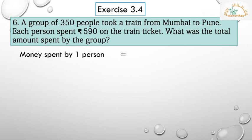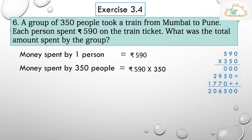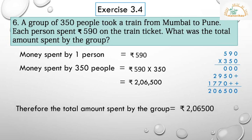Here is the solution. Money spent by one person is equal to rupees 590. Money spent by 350 people is equal to rupees 590 multiplied by 350. After the calculation we get 2,06,500. Therefore, the total amount spent by the group is equal to rupees 2,06,500.